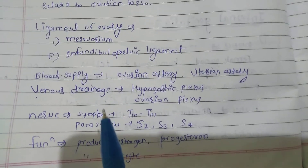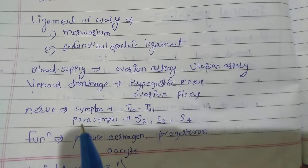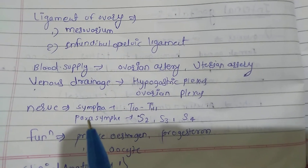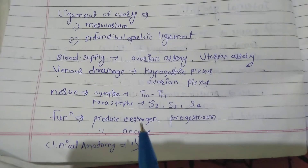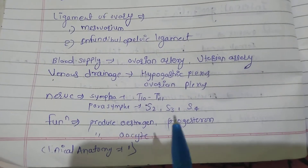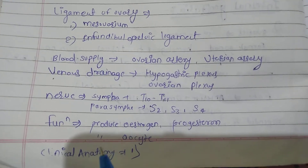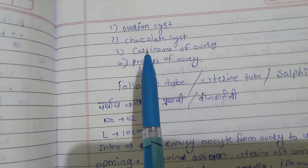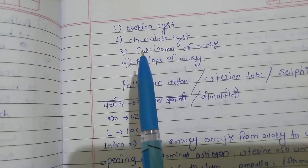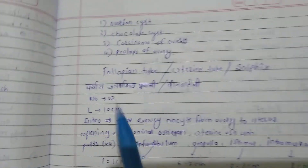Nerve supply of the ovary: sympathetic by T10 to T11, and parasympathetic S2, S3, S4. Functions: produces estrogen, progesterone-like hormones, and produces oocytes. Clinical anatomy includes ovarian cyst, chocolate cyst, carcinoma of the ovary, and prolapse of the ovary.